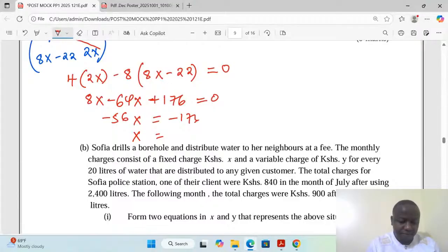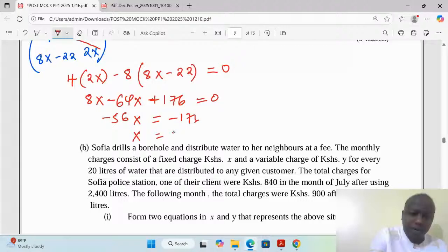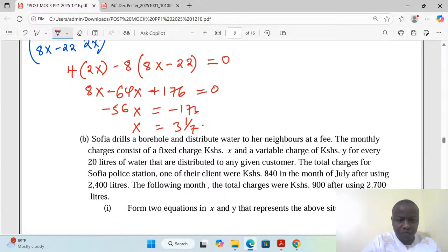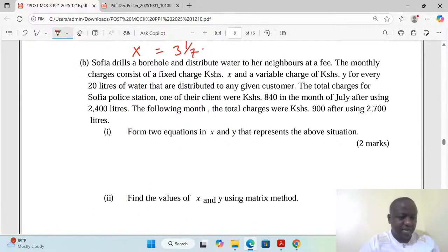When we divide here we're going to get x equals 3 and 1 over 7.